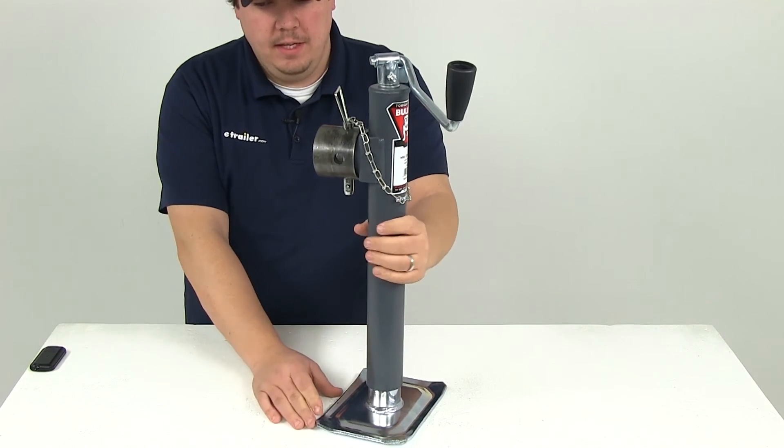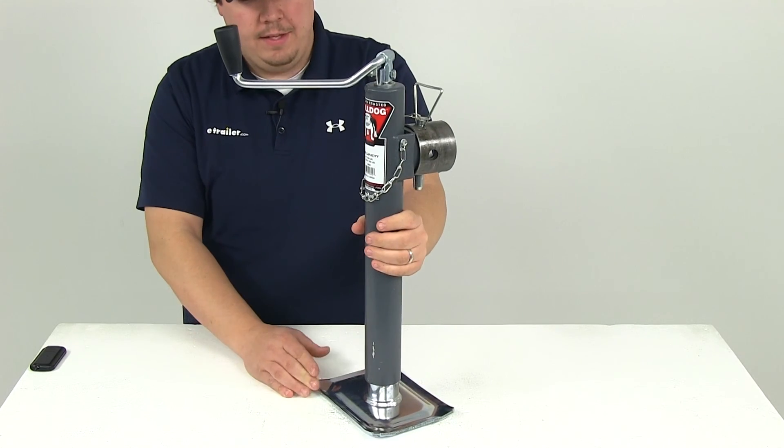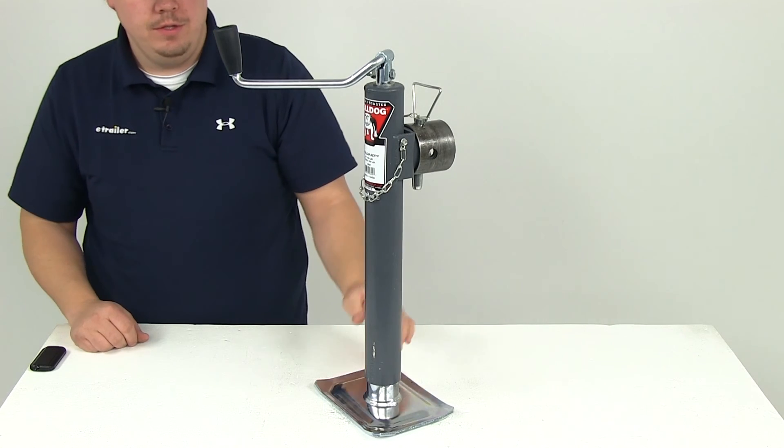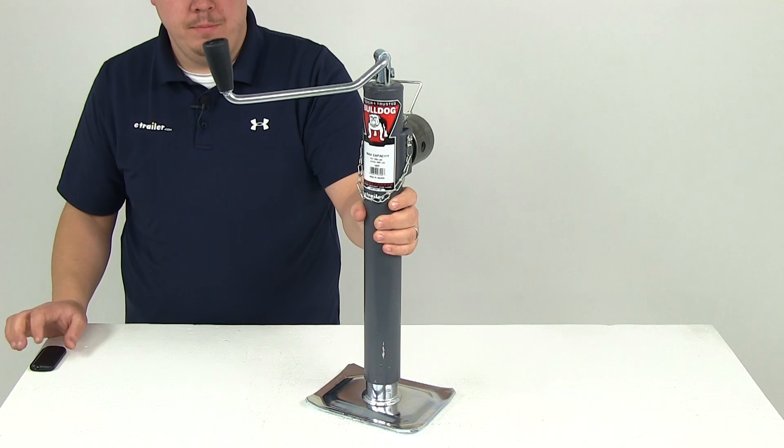The jack offers a lift capacity of 7,000 pounds. That's going to do it for our review of part number BD-198200, the Bulldog round pipe mount swivel jack rated at 7,000 pounds.